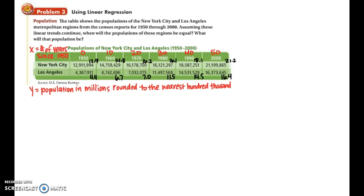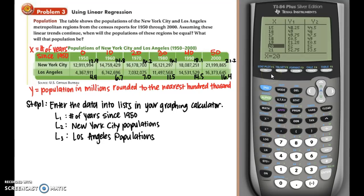And for our y values, instead of having to type in those big numbers each time, we're going to say that the population is in millions. And make sure you label both of those variables on your notes and then also change the x and y values to match what I have on the page. For my y values for New York City, I have 12.9, 14.8, 16.2, 16.1, 18.1, and 21.2. And for the Los Angeles y values, I have 4.4, 6.7, 7.0, 11.5, 14.5, and 16.4.